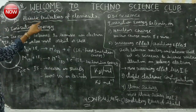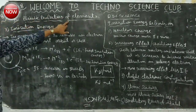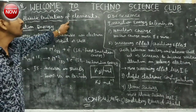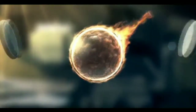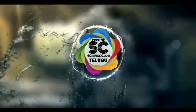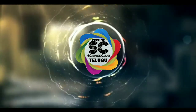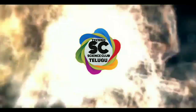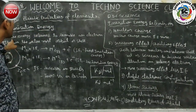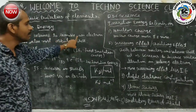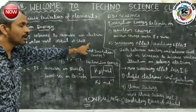In the 10th class periodic table, we study the classification of elements and periodic properties of elements. Among those periodic properties, the third property is ionization energy. What is meant by ionization energy? The energy required to remove an electron from the outermost orbit or shell of